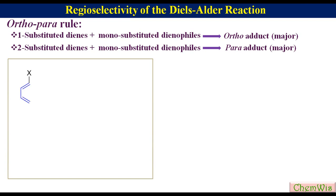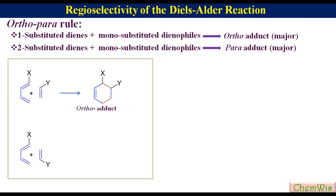If we have a mono-substituted diene and a mono-substituted dienophile, there are two possible regioisomeric products. Orientation of the diene and dienophile in one way will give the ortho adduct, while the other orientation will give the meta adduct.